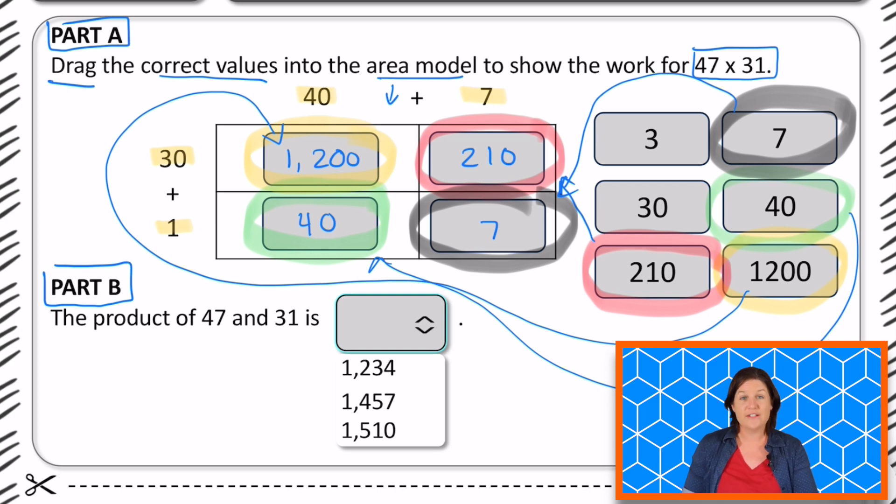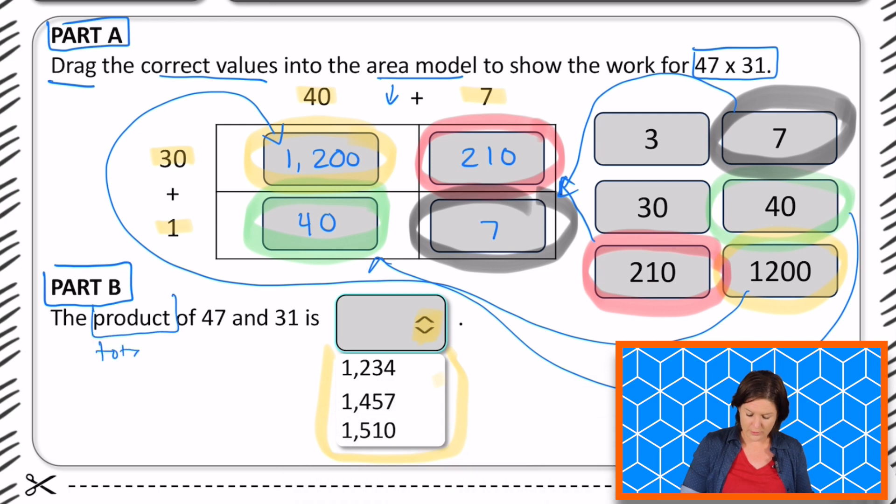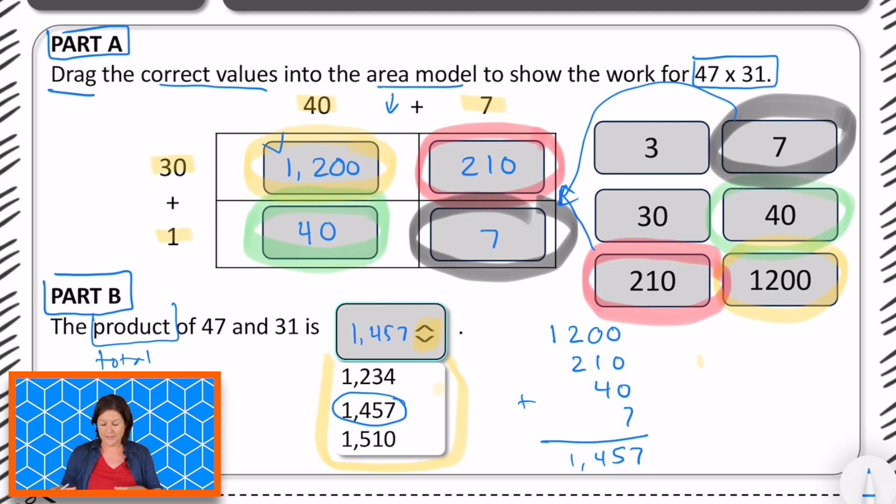Part B says, find the product of 47 and 31, or it says the product of 47 and 31 is, and we have a dropdown menu. So we would click these two little lines and it would drop down this menu right here. And we have to select the correct product. Now the product is the total when you multiply. So we've done most of the work in the area model. I'm just going to go ahead and take that. So we've got 1200 plus 210 plus 40 plus 7. If we add those together, we get 1457. So we would go ahead and select this one and it would show up right here. Okay. So go ahead and make sure that you have all of these notes copied on your paper as we're practicing for a computer-based test. And that's it for this week.